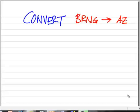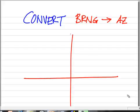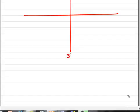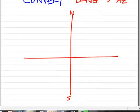Okay, this time let's convert bearings to azimuths. Axis pair, right? North, south, east, west.